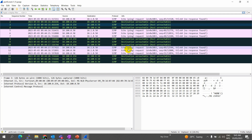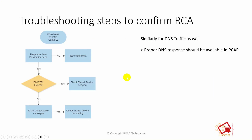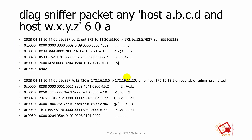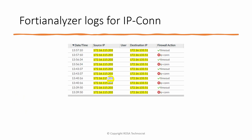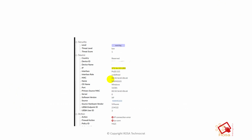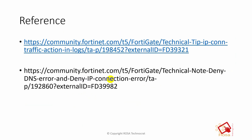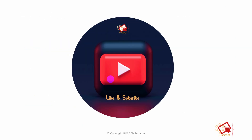So now you understand why we see IP connection errors. Keep in mind the possible causes: wrong DNS queries, host not reachable, abnormal TCP termination, and HTTP errors. It's something the firewall has nothing to do with — the firewall is working as it is supposed to. Hope this helps with your future troubleshooting of IP connection errors. Thank you for watching, everyone. Bye bye!